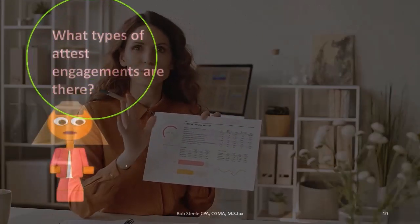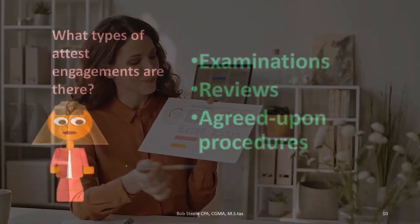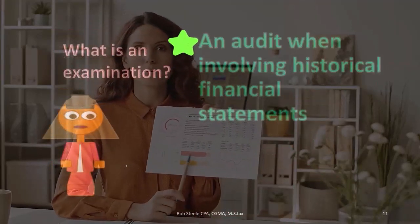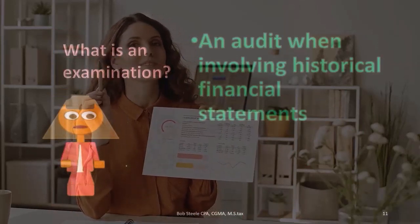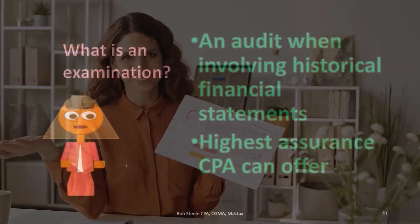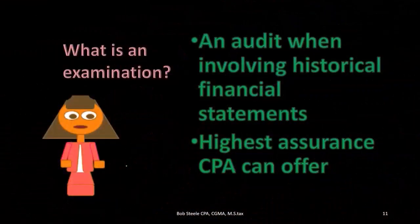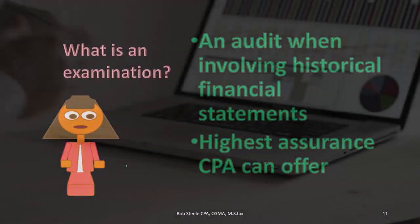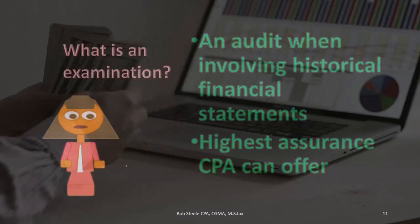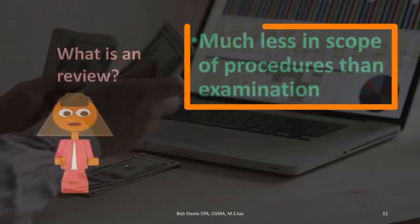The main types of attest engagements are examinations, reviews, and agreed-upon procedures. An examination is typically an audit of historical financial statements — that's the highest level of assurance a CPA can offer. Note that we're talking about financial statement assurance here, not IRS tax audits. A review is much less in scope than an examination.